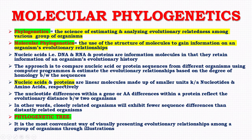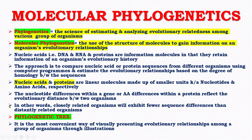Nucleic acids and proteins are the linear molecules made up of smaller units known as nucleotides and amino acids respectively. The nucleotide differences within a gene or amino acid differences within a protein reflect the evolutionary distance between two organisms. In other words, we can say that closely related organisms will exhibit fewer sequence differences than distantly related organisms.